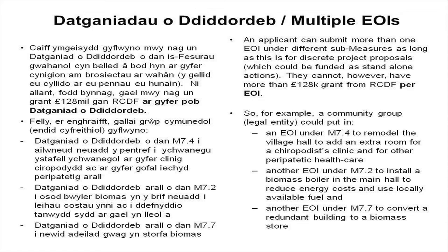For example, a community could apply under Measure 7.4 to remodel a village hall to add an extra room for a chiropodist clinic. They could then put in another expression of interest under Measure 7.2 to install a biomass boiler to reduce energy costs. They could then put another in under Measure 7.7 to convert a redundant building into a biomass store — showing how multiple sub-measures can be used to reach a desired aim.